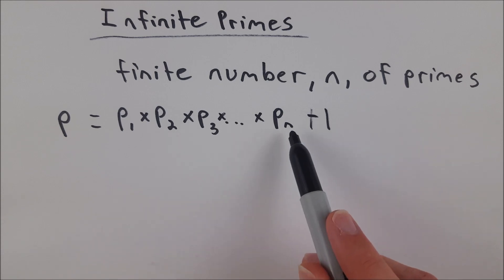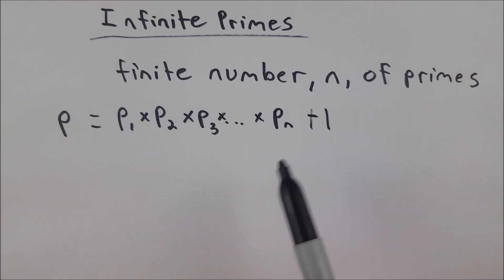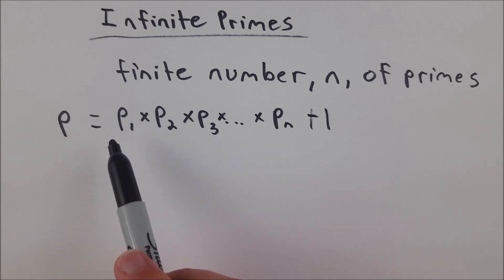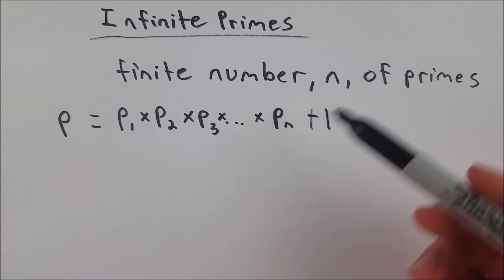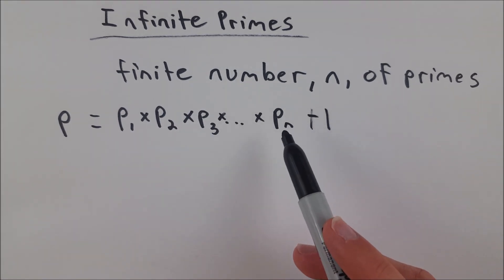So now notice that p sub n is our largest prime, right? It's our last prime. We also know that P is bigger than any of the primes, because it's the product of all of them, plus 1. So it's absolutely bigger than every single prime number that we have.